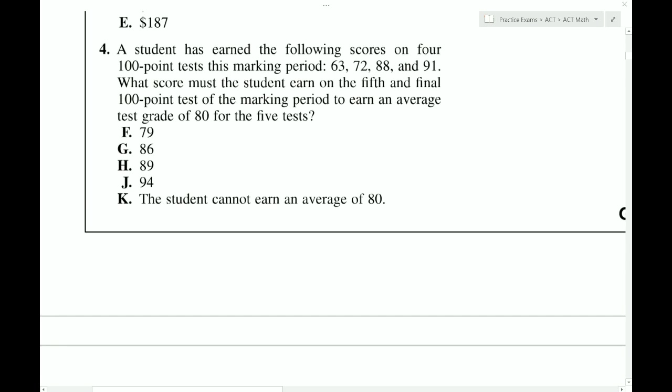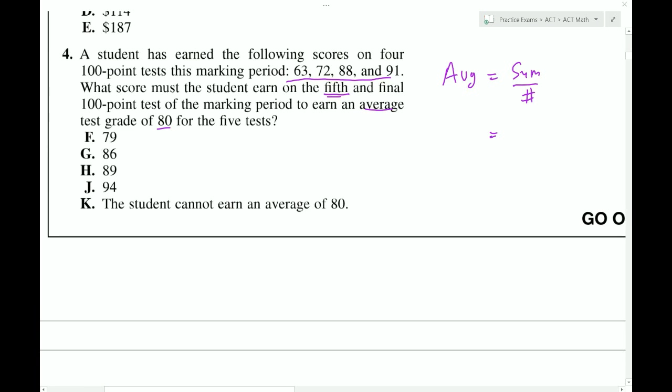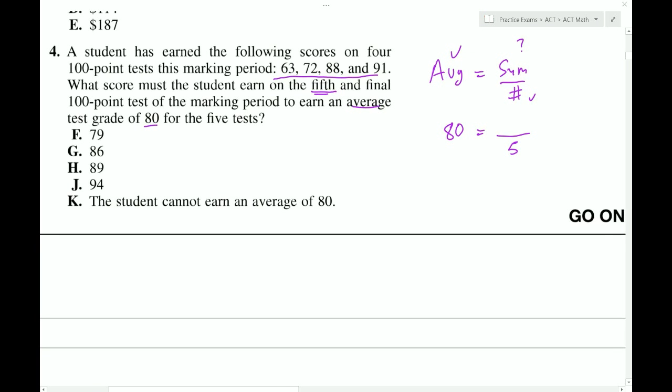A student has earned the following scores on four tests. What score must a student earn on the fifth and final test to have an average of 80? Well, this is an average question. So we always use the same formula. Average equals sum over number. Where sum is just adding everything together and the number is how many things we're adding together. So in this case, we know that the average itself is going to be 80. So we could fill that in. And we know how many items there are. There's going to be five exams. So this is going to be the part that's sort of missing information.